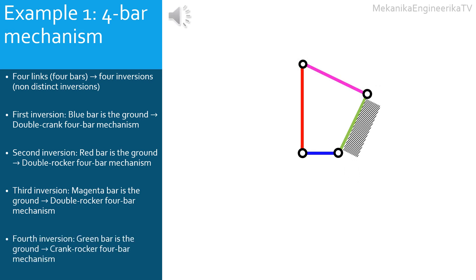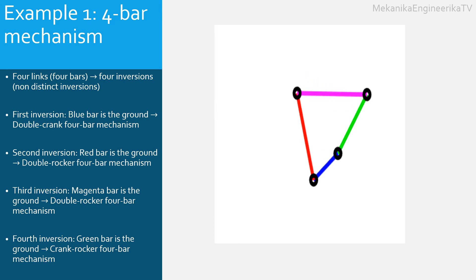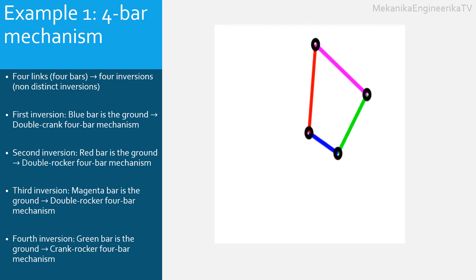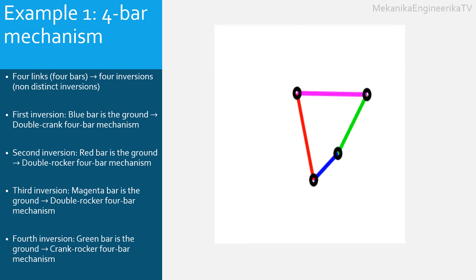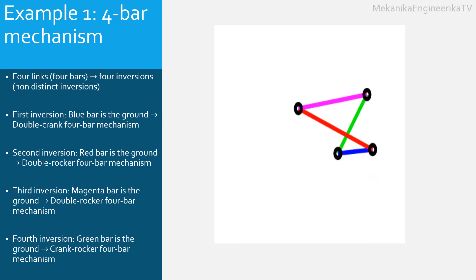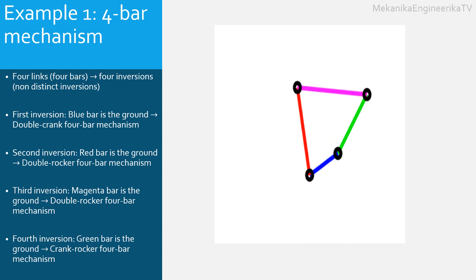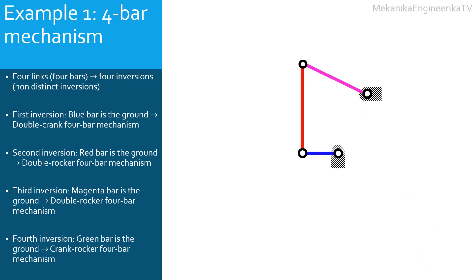The fourth and last inversion is created by grounding the green bar. In this inversion, the blue, red, and magenta bars are rotating. The blue and the magenta bars can be one the input and the other is the output. The red bar is the coupler. Here, the blue bar can undertake a full 360-degree rotation — it is a crank. The magenta bar cannot undertake a full 360-degree rotation — it is a rocker. This mechanism is called a crank-rocker four-bar mechanism. This schematic shows the kinematic diagram of the fourth inversion.